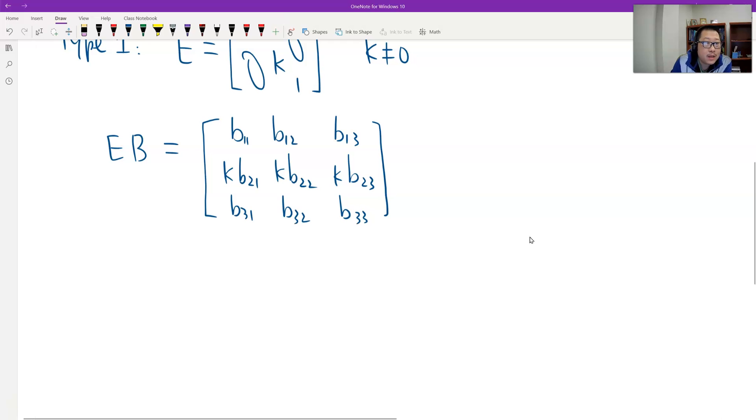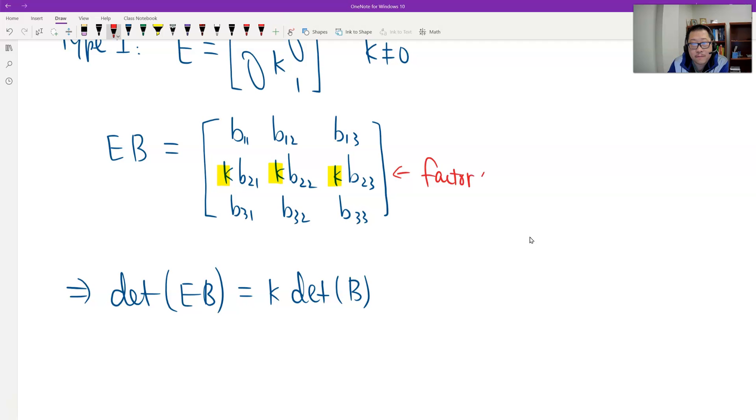Therefore, you can look at the determinant. The determinant of the product EB should be equal to the determinant of that. I can factor this out by the row operation, the theorem we learned before, which is k times the determinant of B. It's easy to just factor out that k from the second row of matrix EB. This is true.